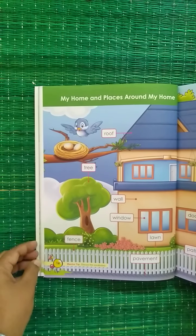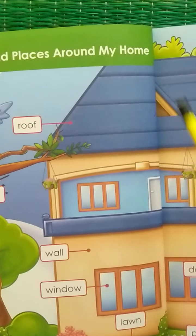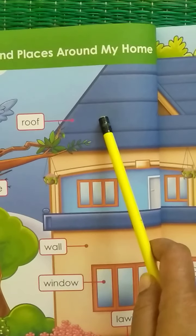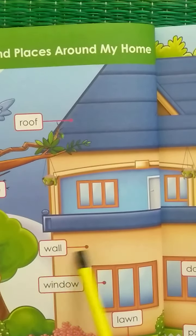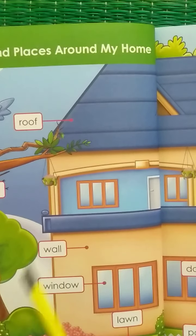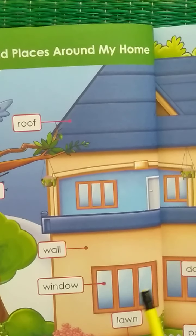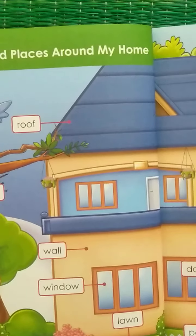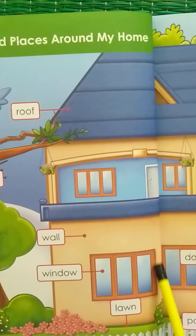Now see here children, the top portion of your house is called as roof. What is this? Roof. And this is the wall. What is this called as? Wall. And what are these? I am sure every house has this. What is this called as? It's a window. You open the window so the sunlight and fresh air comes in, isn't it? What are these called as? Windows.